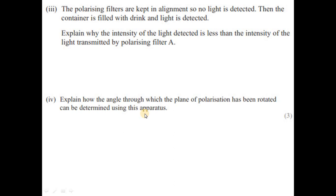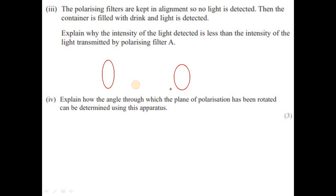The polarizing filters are kept in this alignment so no light is detected. Then the container is filled with the drink and light is detected. Explain why the intensity of the light detected is less than the intensity of the light transmitted by the polarizing filter. The setup has filter A, then the container with solution, then filter B.